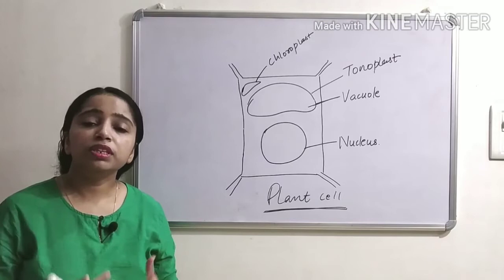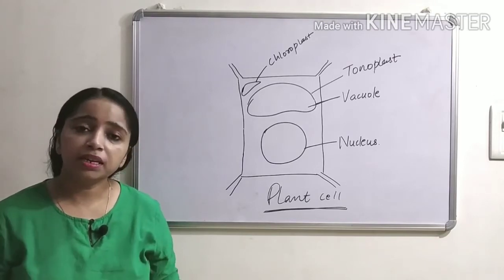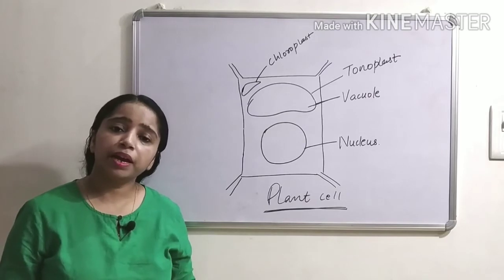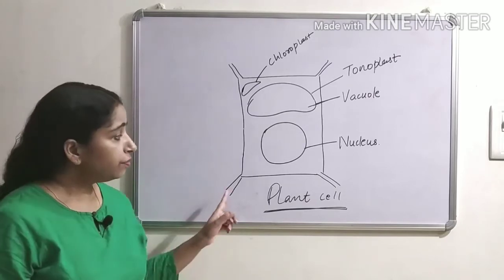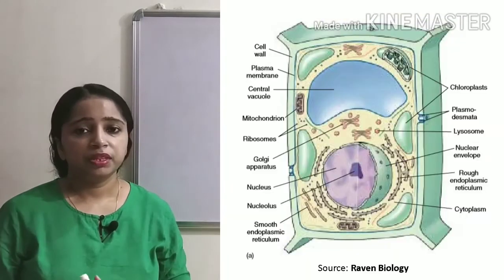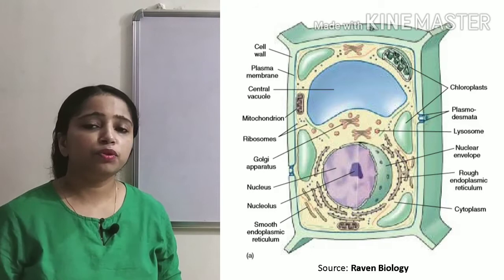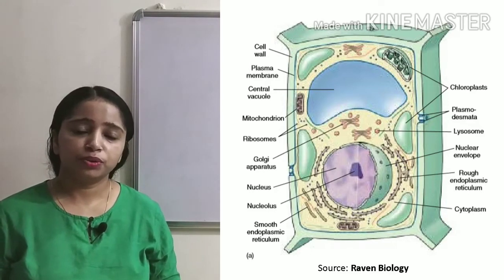Vacuoles can occupy more than 30% of the plant cell volume, and in some cases it can even occupy 90% of the plant cell volume. The reference image which I use for this diagram is this. This picture has been taken from Raven biology book. You can use this picture for your notes.